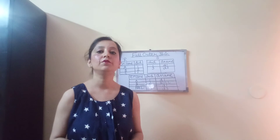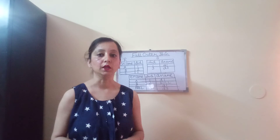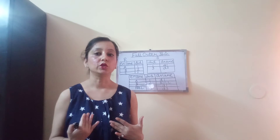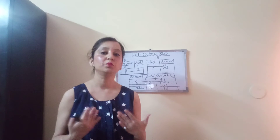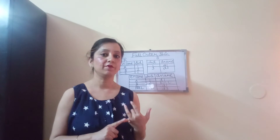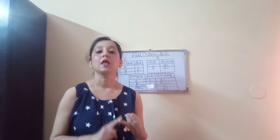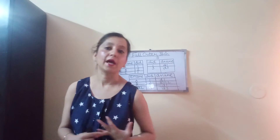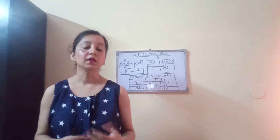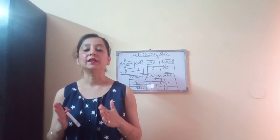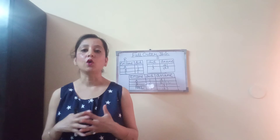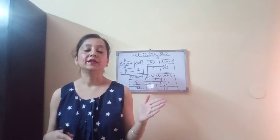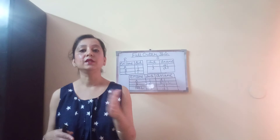Today we will discuss the full outer join. Just like the right outer join and the left outer join, the full outer join gives full liberty to both the tables. The right outer join gave liberty to the right side table, and the left outer join gave liberty to the left side table. The liberty was that irrespective of whether the common columns have matching values or not, the table had liberty to keep all the tuples in the resultant table.